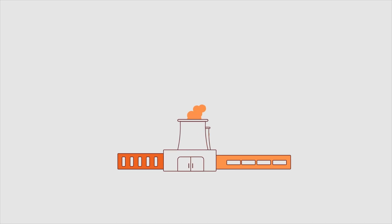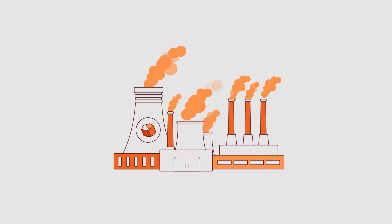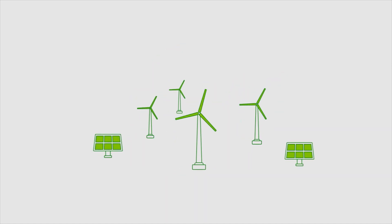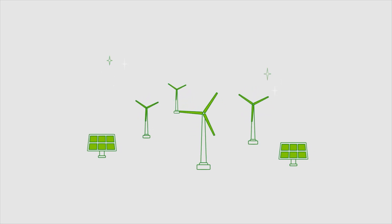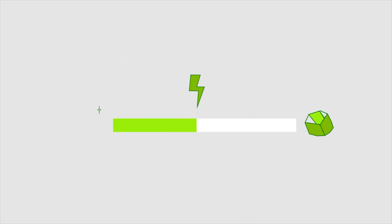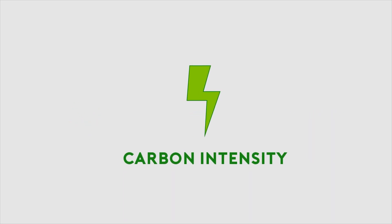I've mentioned before that electricity is dirty, but how dirty is it? Well, it depends on where it was made. If it was made in a fossil fuel power plant like a coal power plant, then it's going to be quite dirty. If it was made in a renewables plant like a wind or a solar farm, then it's going to be quite clean. This measure of how dirty your electricity is is called carbon intensity, and all electricity has this number.